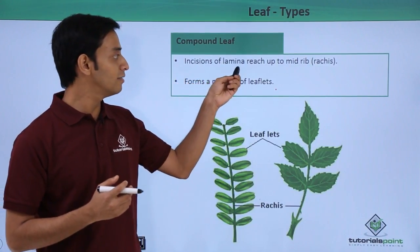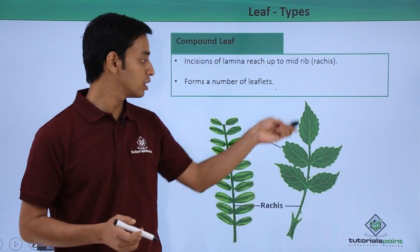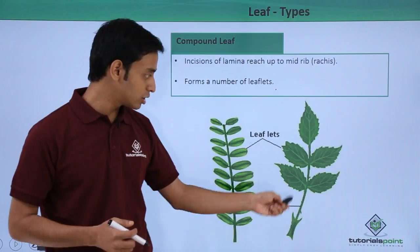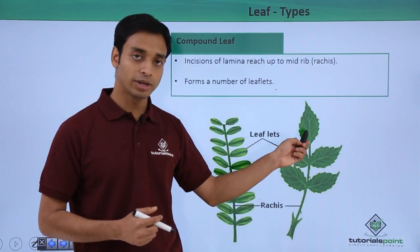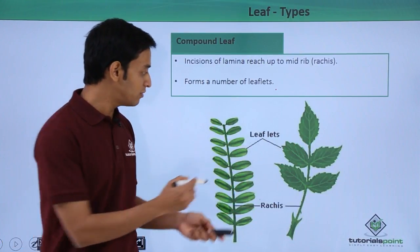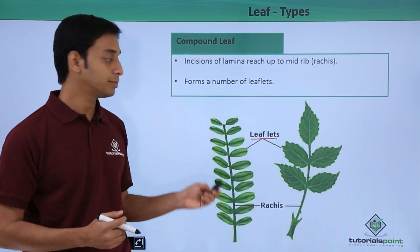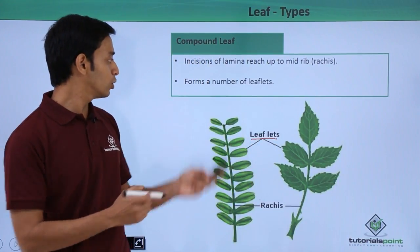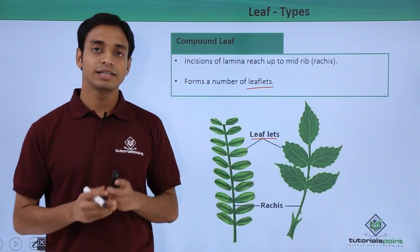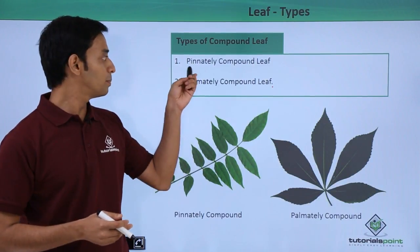Compared to simple leaves, in compound leaves the incisions or margins divide and reach up to the midrib, which is also known as the rachis. You can see in these pictures the midrib or rachis has been labeled. The incisions have divided and smaller leaflets have been formed, and they are attached to a common point, forming a number of leaflets.